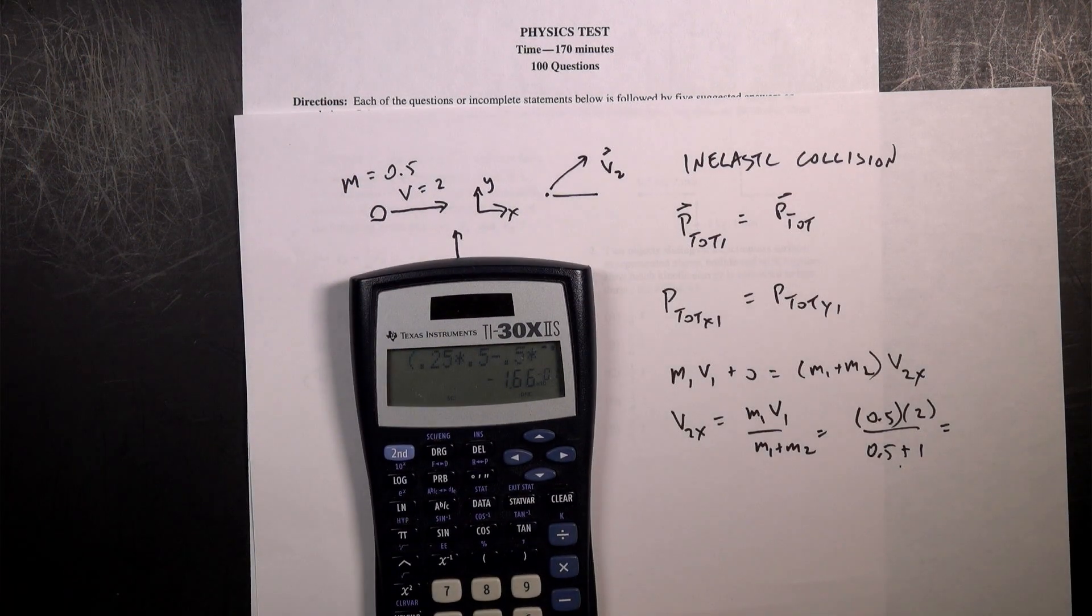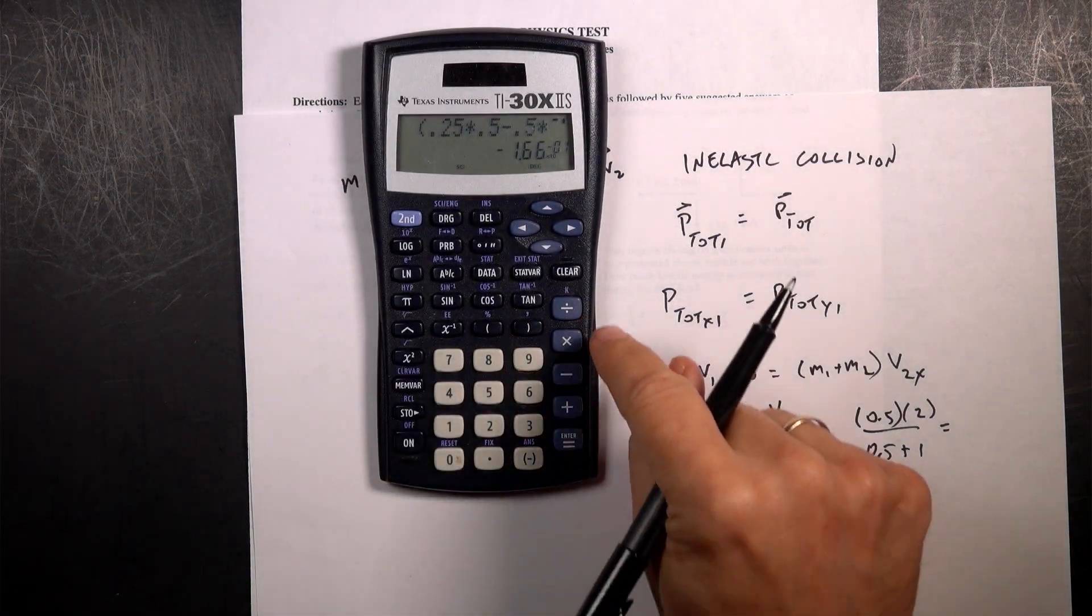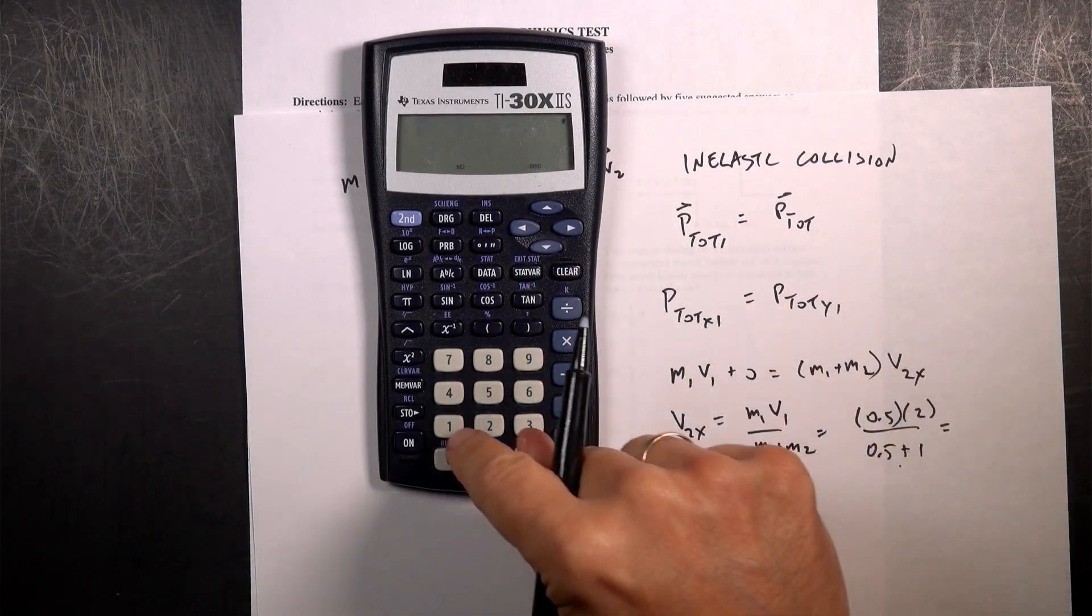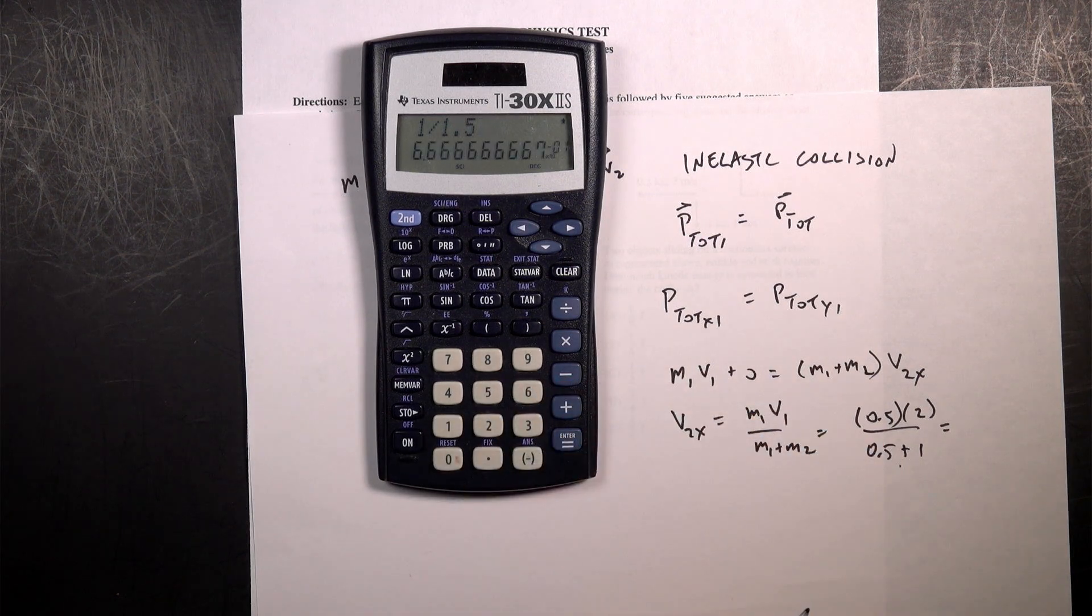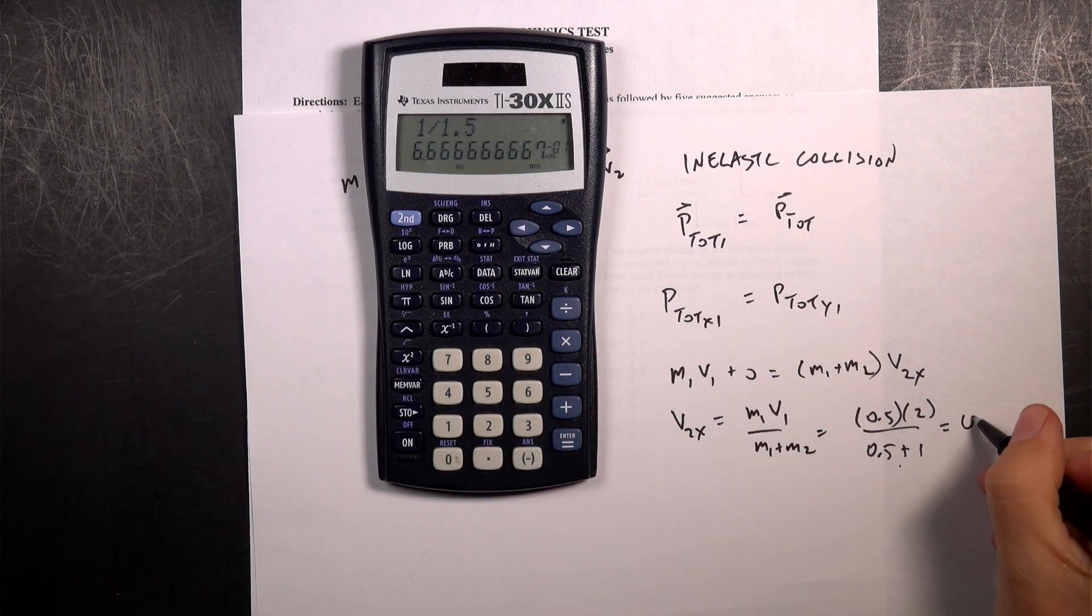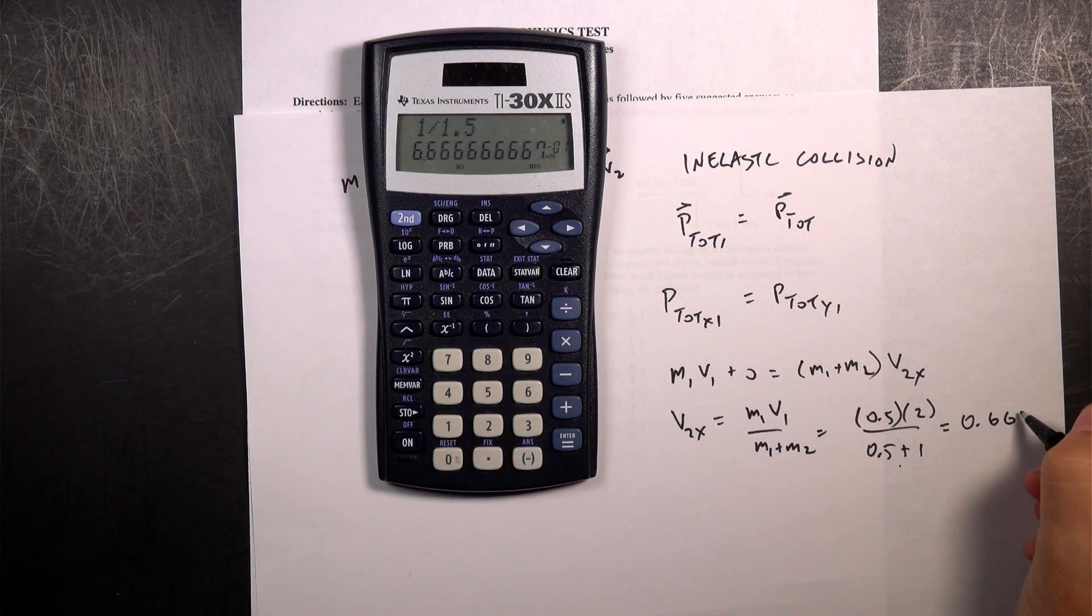Okay, get out the calculator. I think you can use the calculator on the test. So clear, 1 divided by 1.5. And you should know that as 0.667. That's fine.